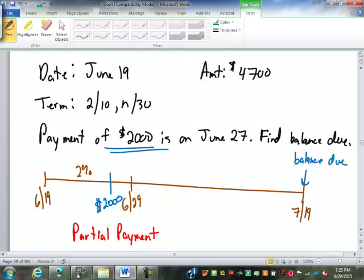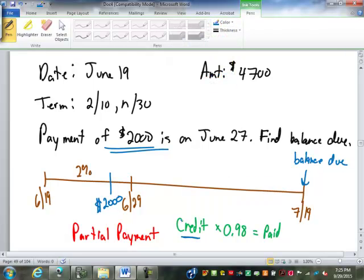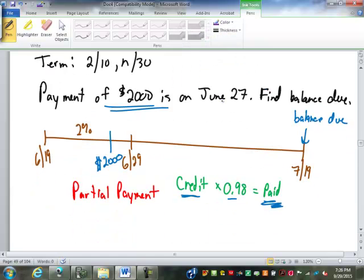The amount of the credit goes off of that discount formula that we looked at before, where you take the payment, or sorry, take the balance or the amount credited. Usually that's the full balance is what we get credited, times, this is 2%, so that would be 0.98, 98%, equals the amount paid. Well in this case, we don't know the amount credited. In the past, we've looked at the invoice amount and we've paid the whole amount. So we took the invoice amount, used the discount to figure out how much we had to pay. In this case, we know that they paid $2,000, and we want to figure out how much they were credited. So to figure that out, we're going to work backwards and we're going to divide by 0.98.